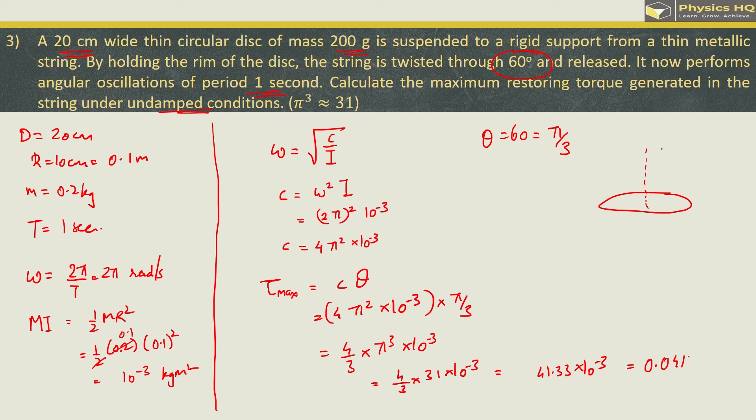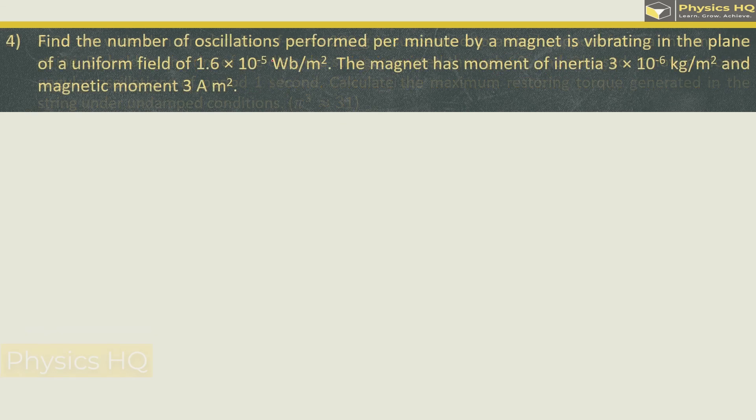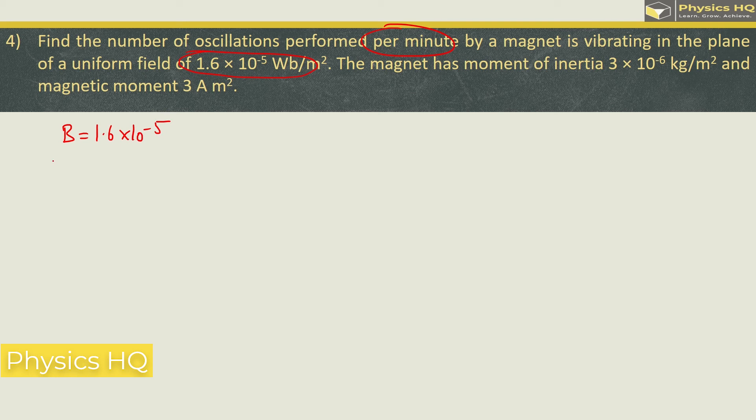Find the number of oscillations performed per minute by a magnet vibrating in the plane of uniform field of 1.6 into 10 raise to minus 5 weber per meter squared so we got B 1.6 into 10 raise to minus 5 with moment of inertia which is given as 3 into 10 raise to minus 6 and magnetic moment which is given as 3 ampere meter squared.